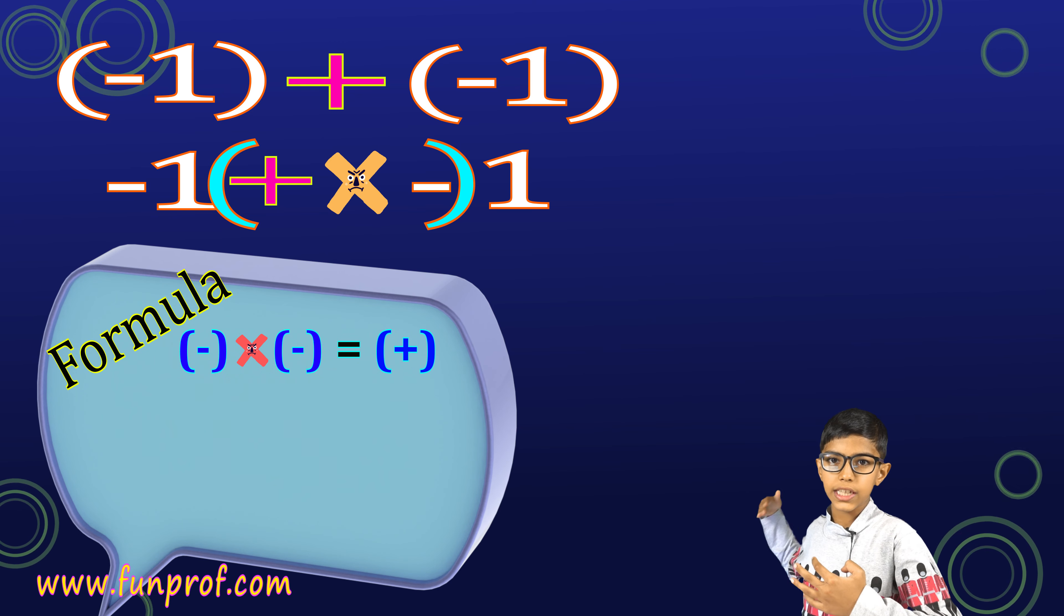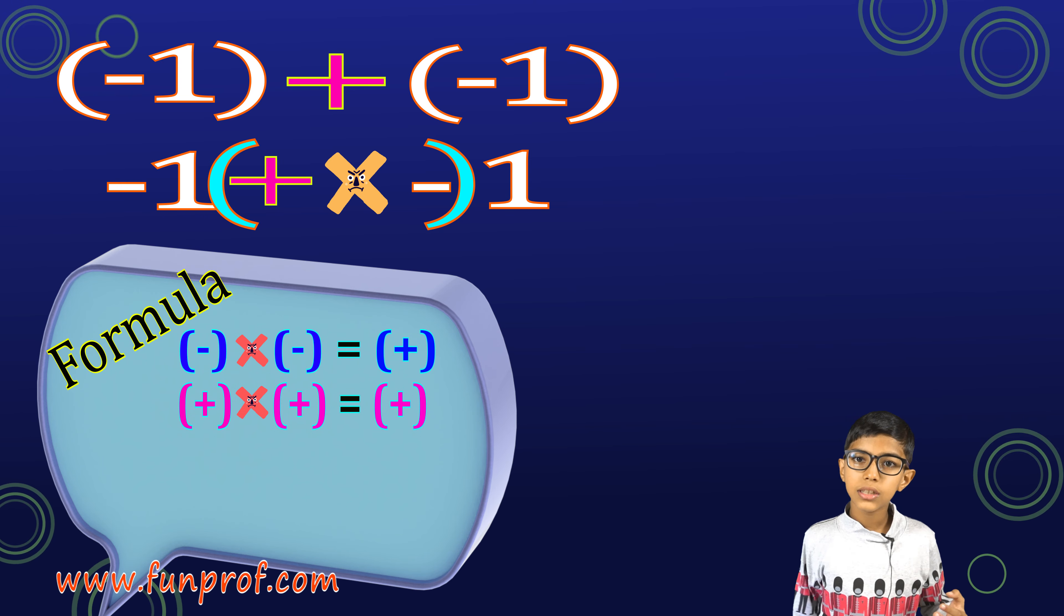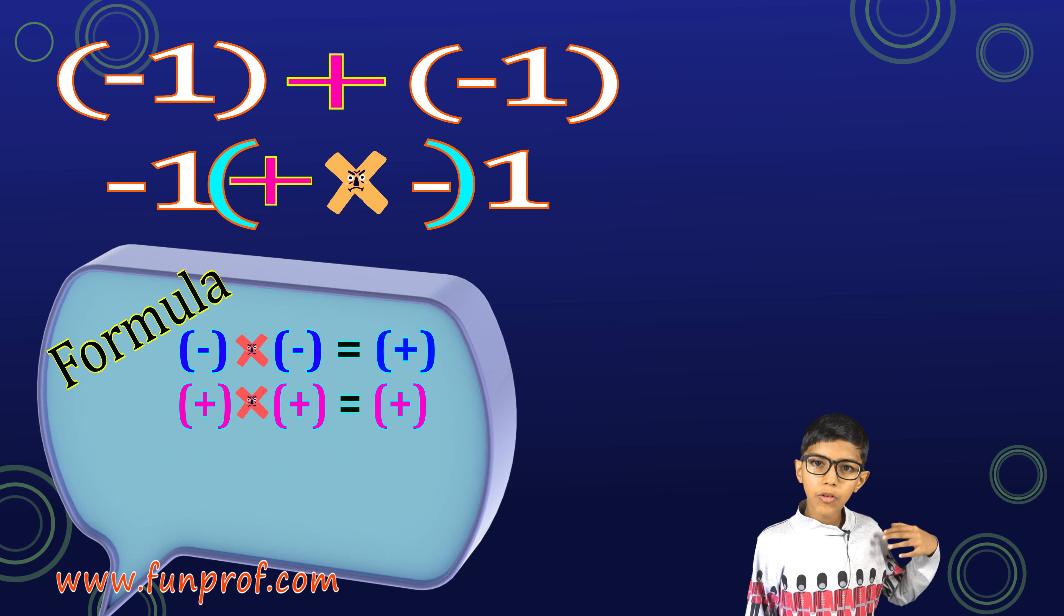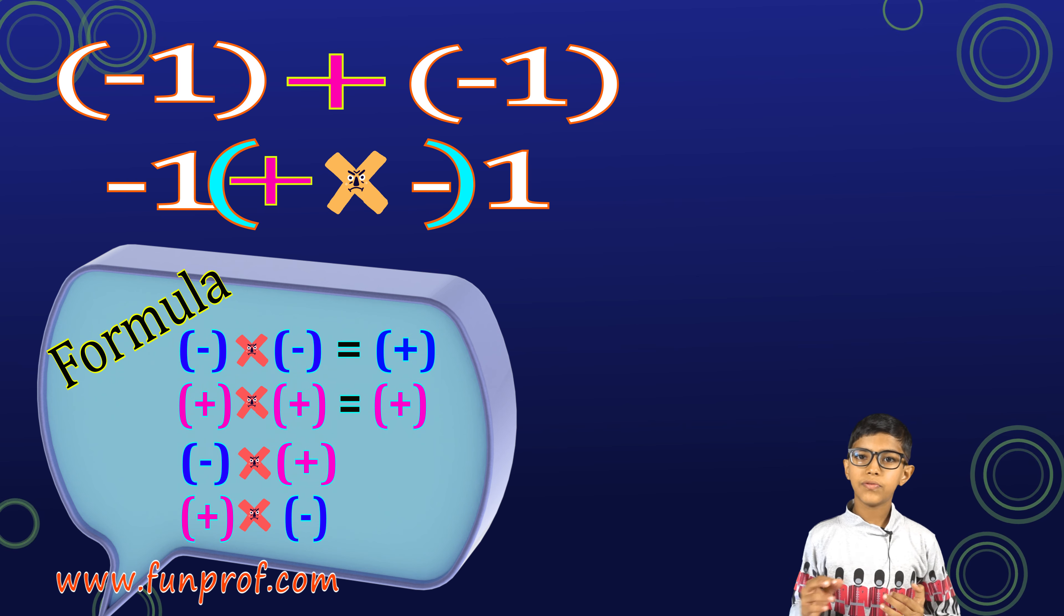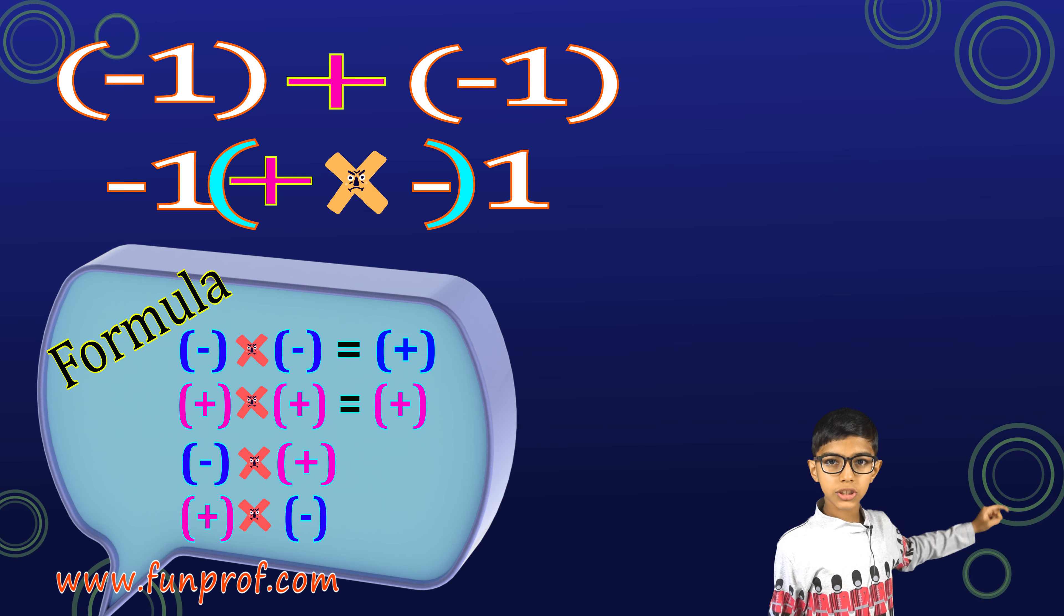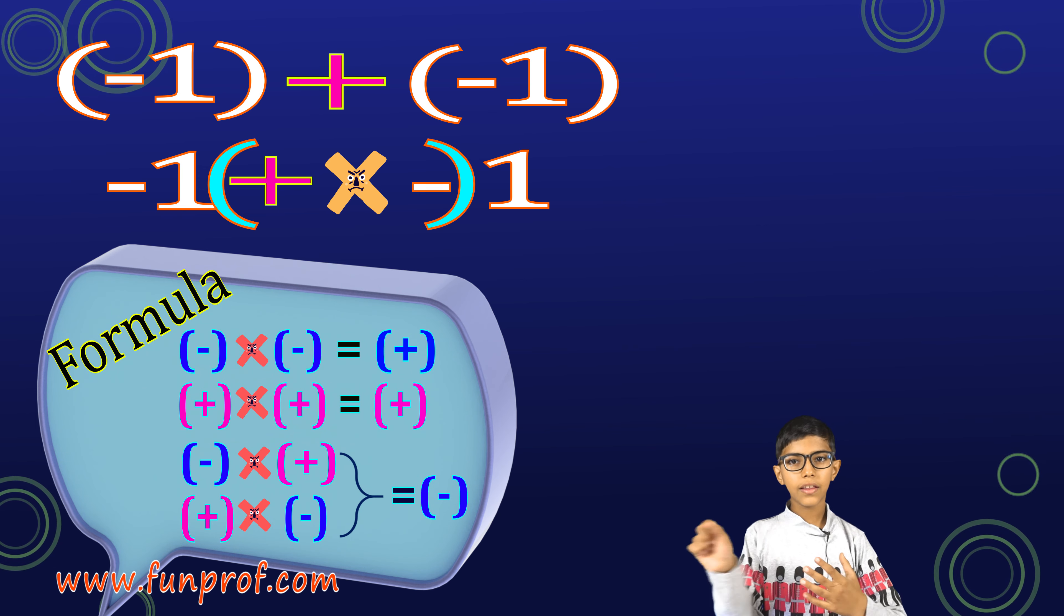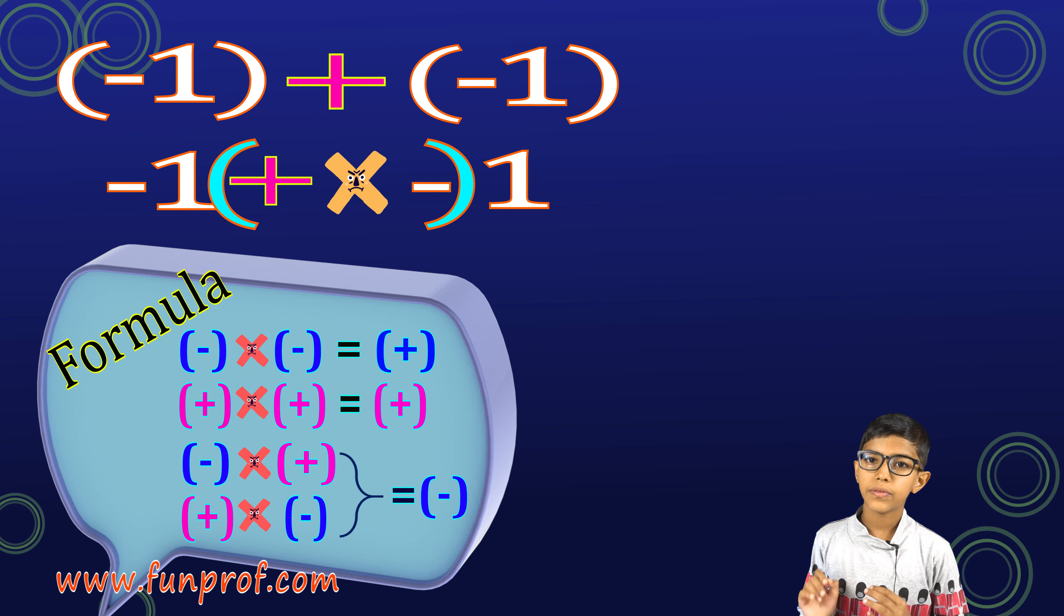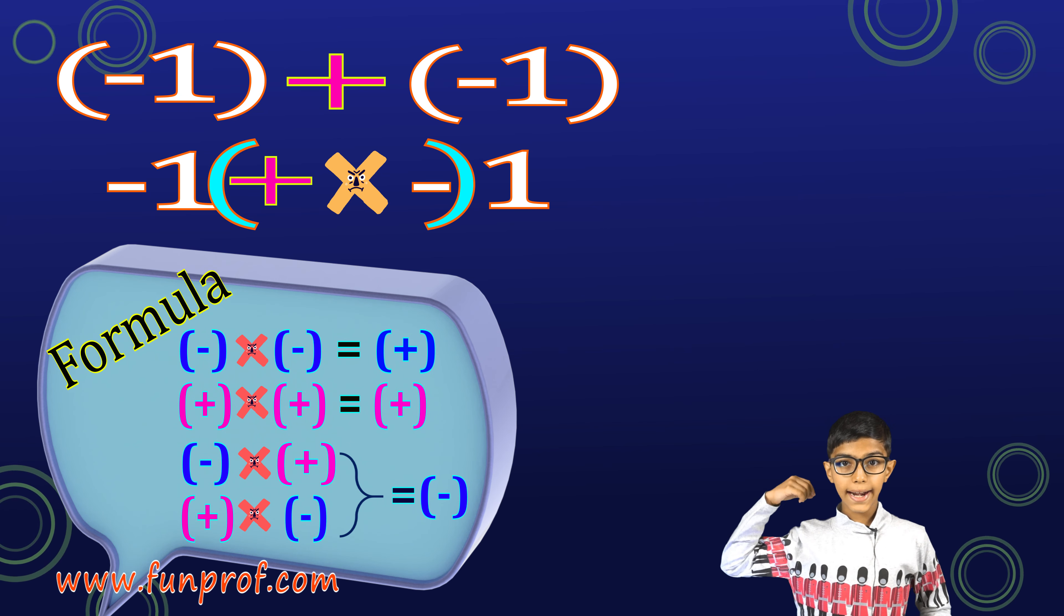So, here we have a formula. When we multiply minus and minus, we get plus. And when plus and plus, we again get plus. But when we multiply minus and plus or plus and minus, we get a negative sign.